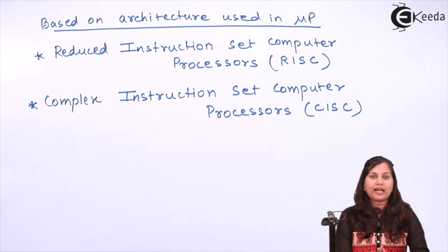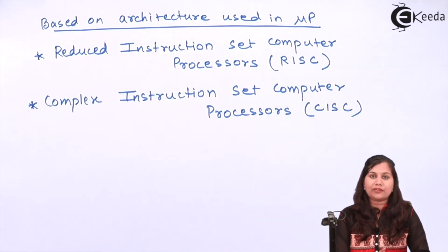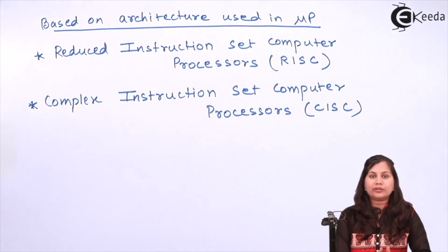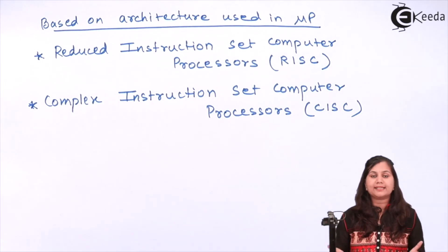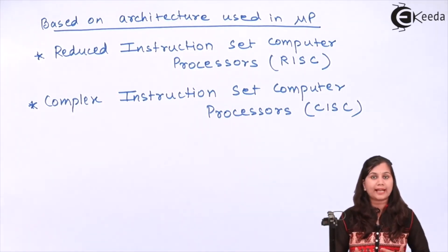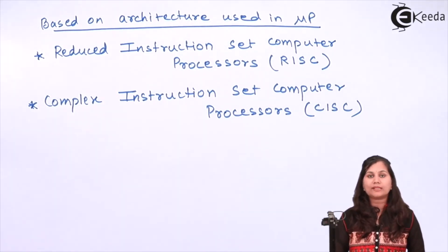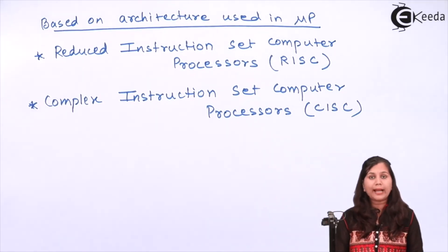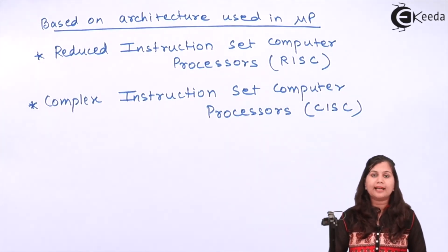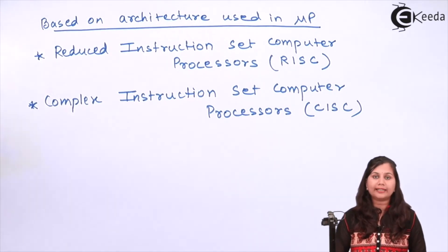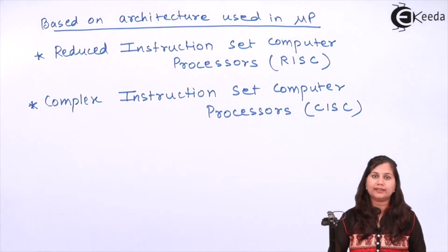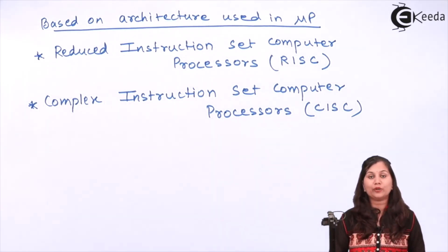In this video we studied the classification of microprocessors. There are three categories: first, based on the size of the data bus; second, based on the application of the microprocessor; and third, based on the architecture used in the microprocessor. I hope this topic is clear to you. Thank you.